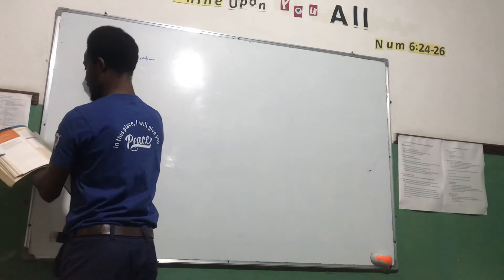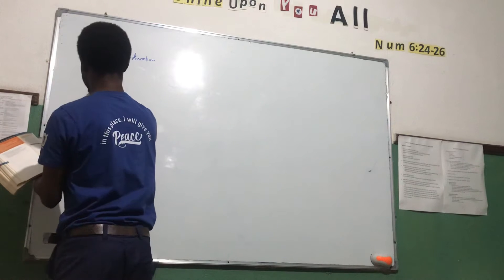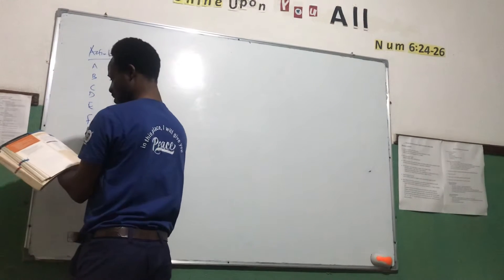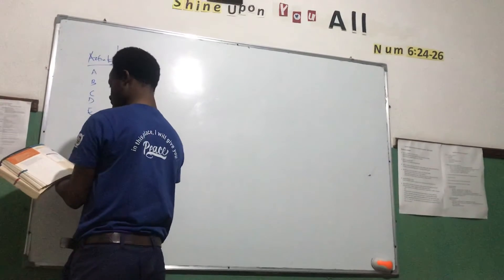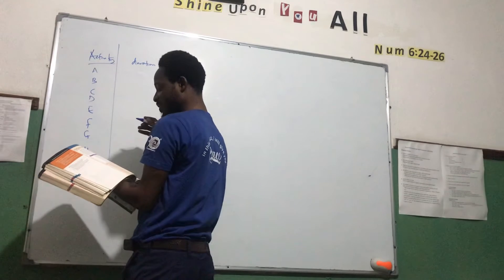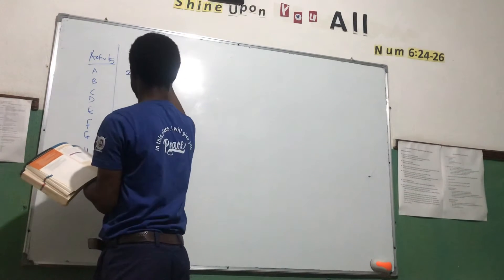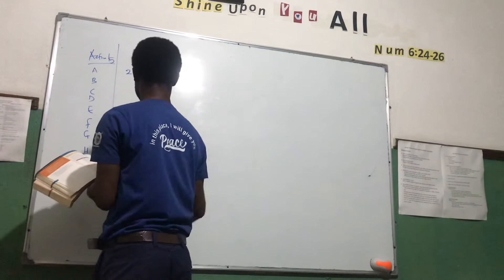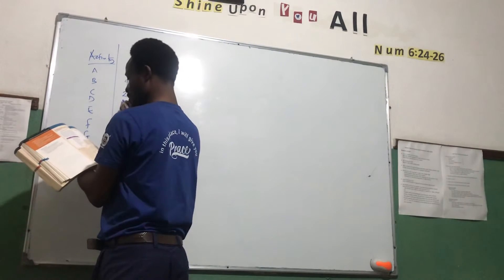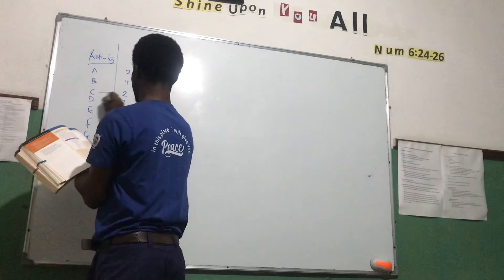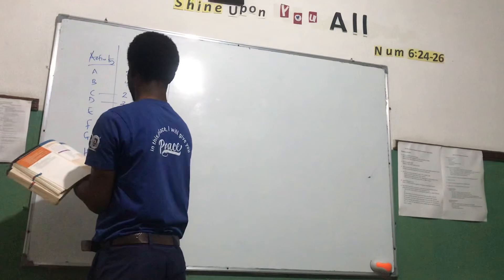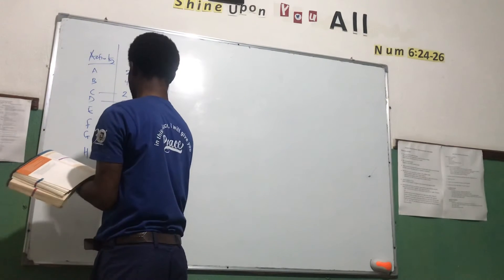The activities listed are A, B, C, D, E, F, G, H, and I. Their durations are: A is 2, B is 4, C is 2, D is 2, E is 3, F is 8, G is 3, H is 2, and I is 2.